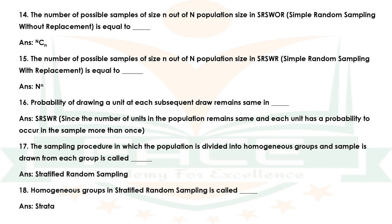The answer is SRSWR (simple random sampling with replacement). Note that since the number of units in the population remains the same, each unit has a probability to occur in the sample more than once.